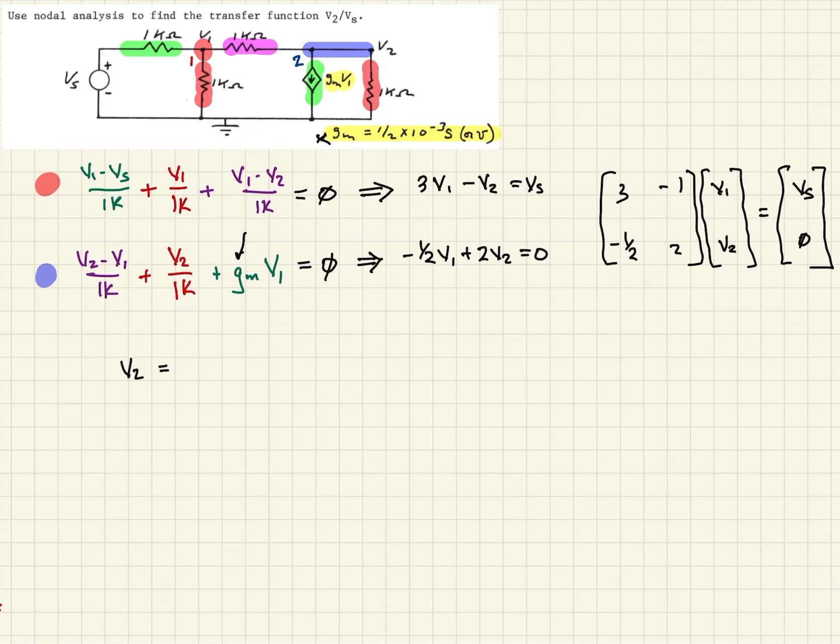Using that, we can solve for V2 by exchanging the columns on the top. That's going to be 3 minus 1 half, Vs and zero. Take the determinant of that, divided by 3 minus 1 half, minus 1 and 2. Take the determinant of that. When we calculate that out, you do your cross-multiplying, you should get 1 half Vs. Cross-multiplying, we should get 6 minus 1 half. So that ends up being Vs over 11.